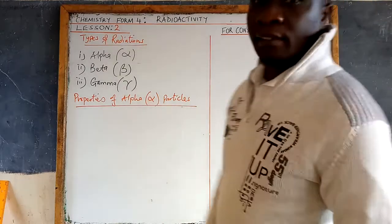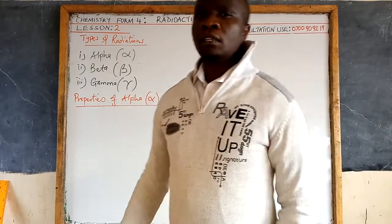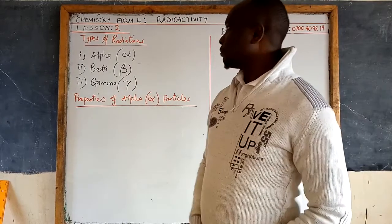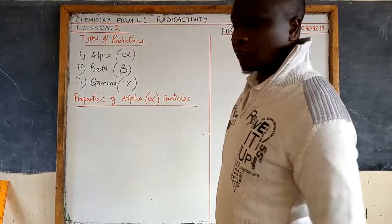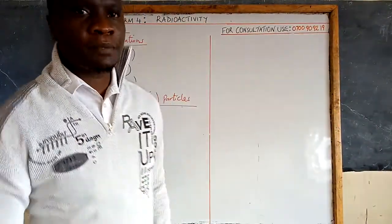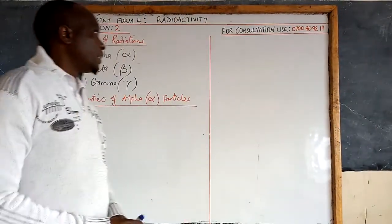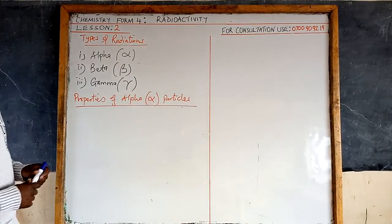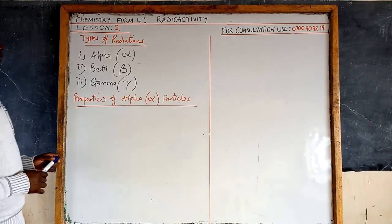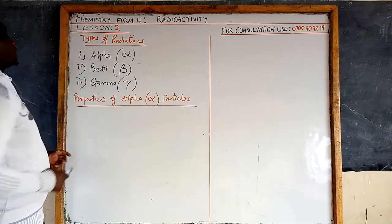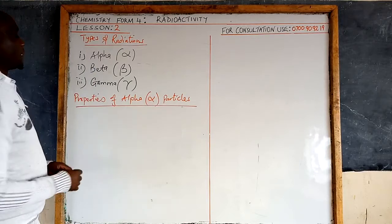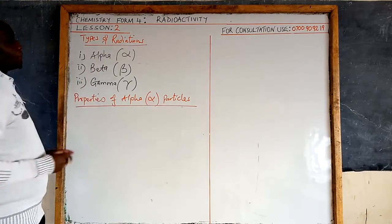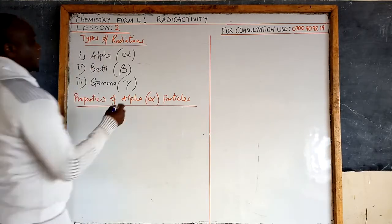Welcome to lesson number two: types of radiation. We have three types of radiation emitted when substances undergo radioactivity. The first type is alpha particles.